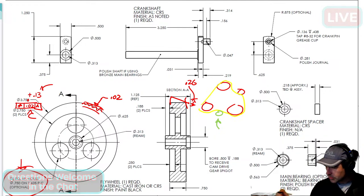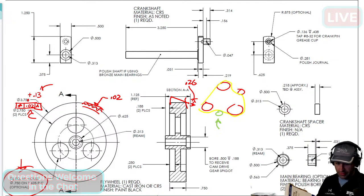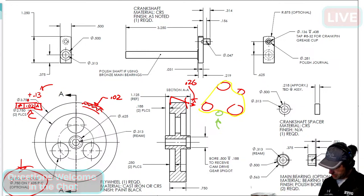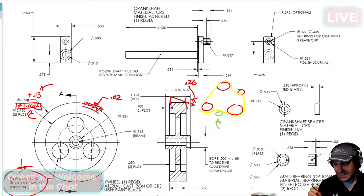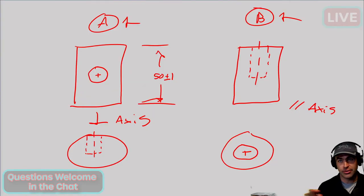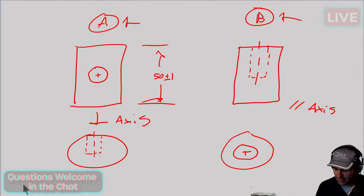Let's move on. It's already past 45 minutes. We did runout — let's talk about concentricity. Most trainers will tell you straight up: just don't use concentricity, it's bad. I won't necessarily agree with that. I think it doesn't do what a lot of people think it does, but it does something really kind of special — it's not the end of the world.